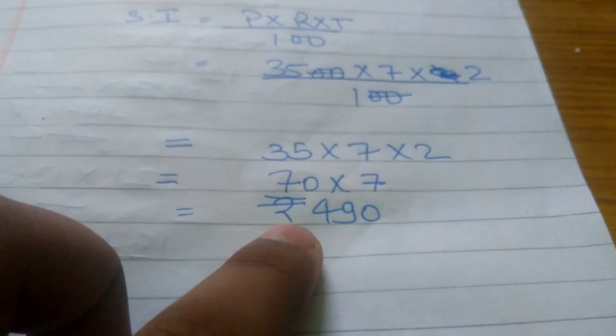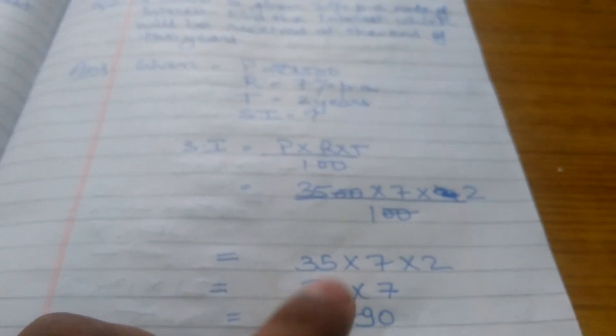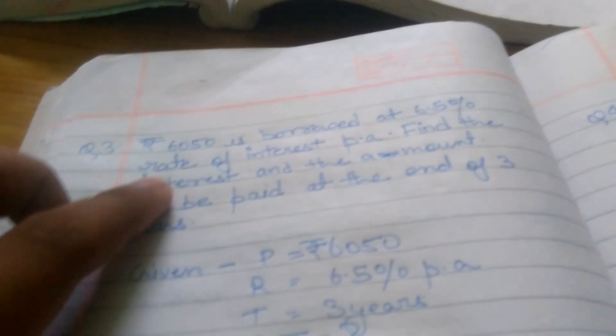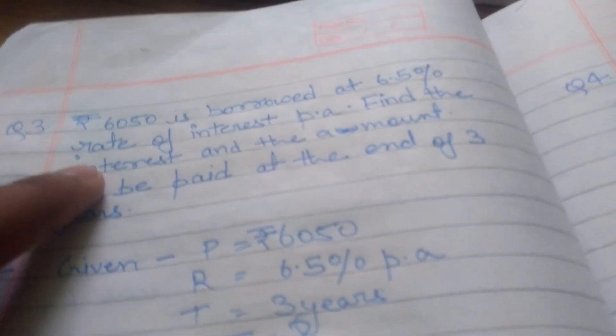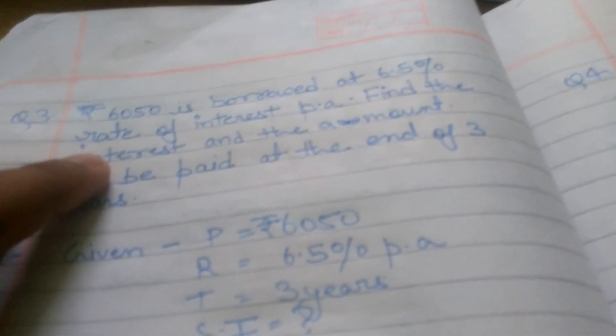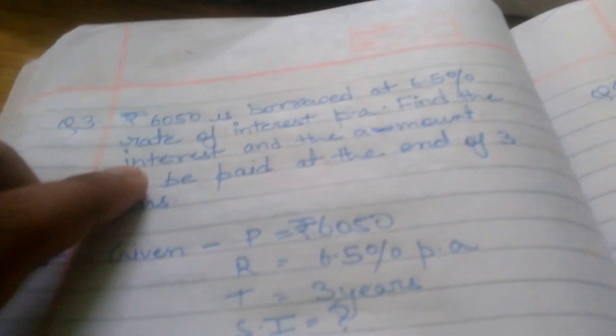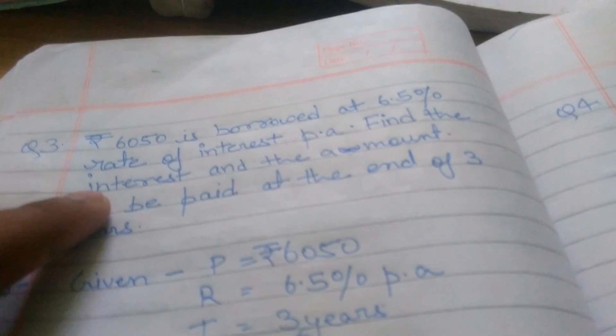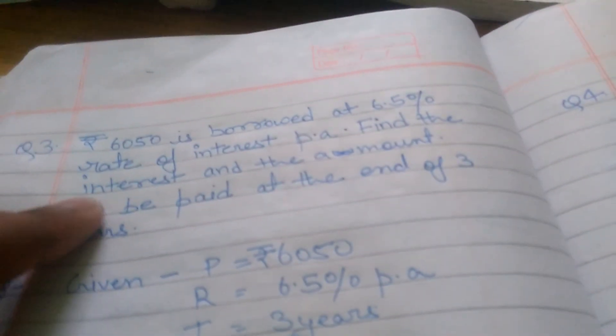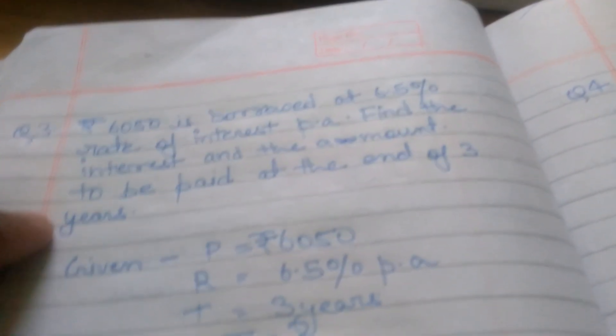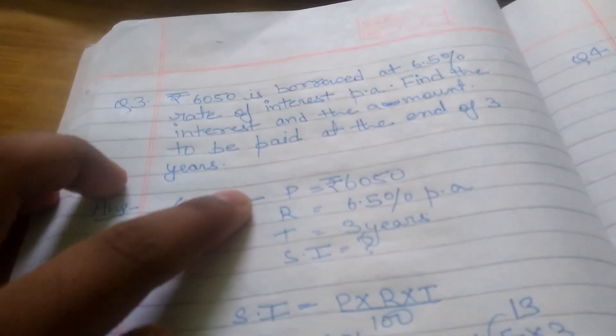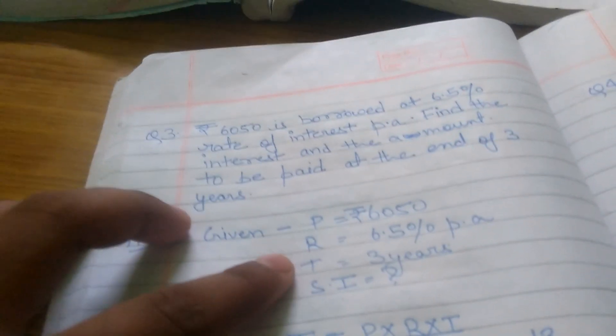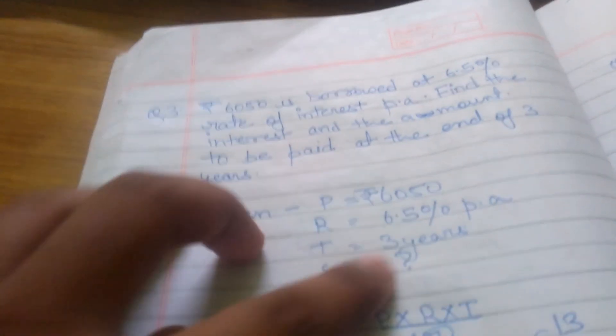The third question: ₹6,050 is borrowed, which means this is Principal, at 6.5% rate of interest. Find the interest and the amount to be paid at the end of three years. Given: Principal, Rate, and Time. We have to find Simple Interest, and then we will solve it.